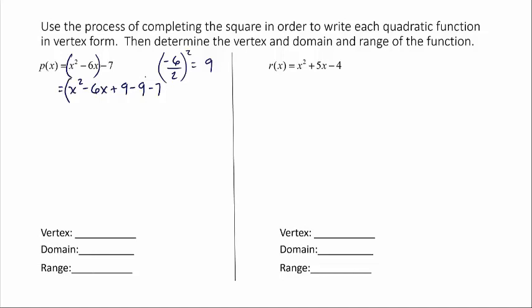From there, I want to factor just this piece of x squared minus 6x plus 9. That's going to be x minus 3 quantity squared. Factors of 9 that add to negative 6, negative 3 and 3. And negative 9 minus 7 is minus 16. So I have now written this in vertex form. The vertex is 3, negative 16. We're thinking about the h value of 3 and the k value of negative 16 there.